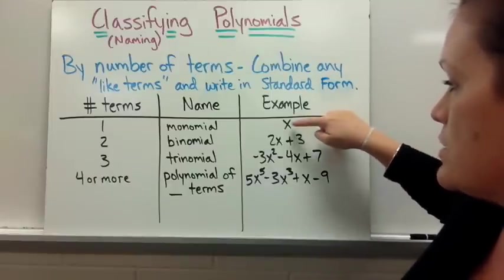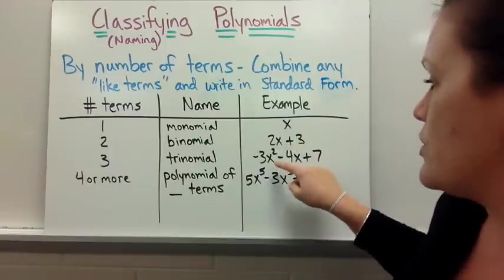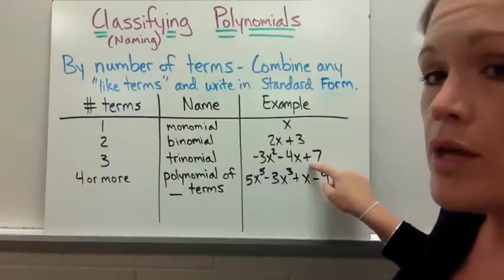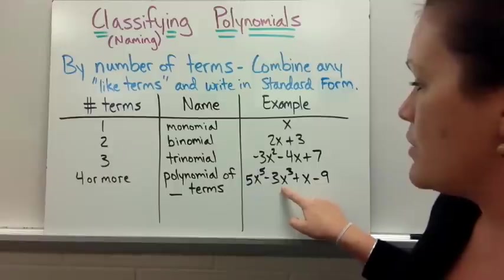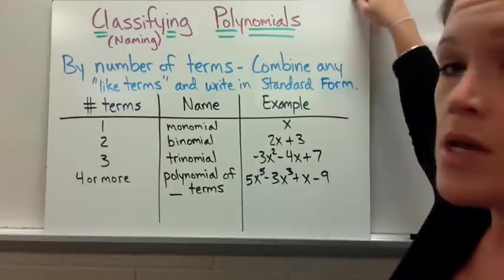As you notice it starts with one term, two terms is separated by a plus sign. So if you're thinking of what makes something a term, it's something that can't be combined with another term and it's separated by plus or minus. Let's look at degree.